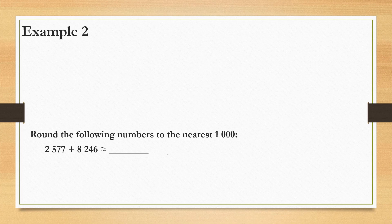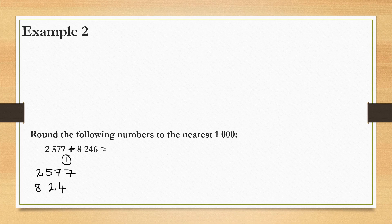For this example, we will follow the same steps as we did for the previous example. First, we will write the numbers below each other in the way that we did in the addition and subtraction series, since we are adding the numbers. So 2,577 and 8,246.